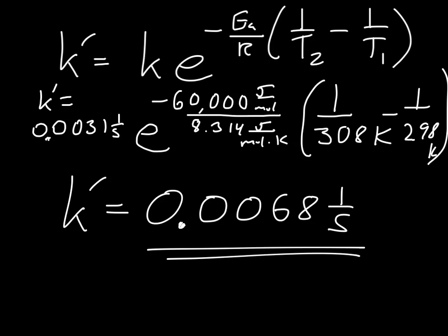So notice that the rate constant approximately doubled when we went up by 10 degrees C. That's a good rule of thumb if we have a typical sized activation energy, and 60 kilojoules is roughly a typical size activation energy. If you have a much higher activation energy, we'll find much bigger changes in rate constant with a 10 degree increase in temperature. So here's your example of using the Arrhenius equation.